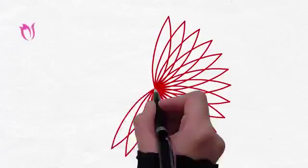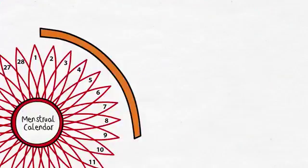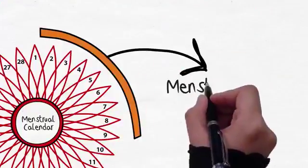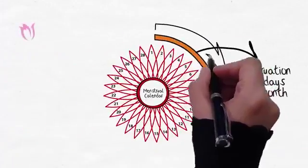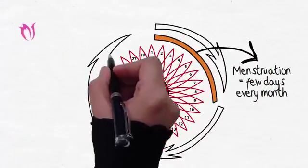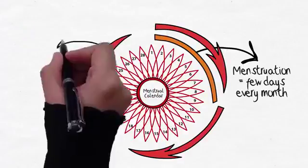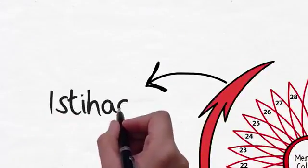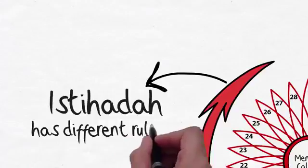And these are the rulings for those who have a regular menstrual flow, hayd, that is the flow comes almost regularly. But some sisters experience a non-stop flow throughout the month or it stops for just a day or two. This is not hayd, it is called istihadha, and the ruling concerning it is completely different from menstruation.